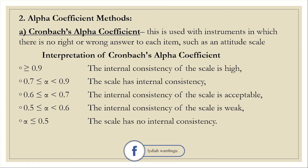How do we interpret Cronbach alpha? Any value greater than 0.9 shows that the internal consistency of the scale is high. A value between 0.7 and 0.9 shows good internal consistency. A value between 0.6 and 0.7 shows acceptable internal consistency. A value between 0.5 and 0.6 shows that internal consistency of the scale is weak, and a value less than 0.5 shows no internal consistency.